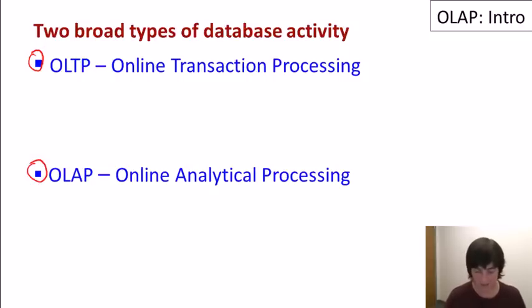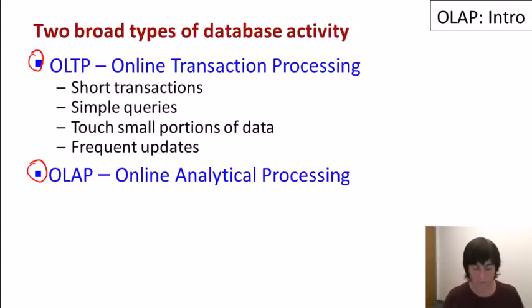Online Transaction Processing is typically characterized by short transactions, both queries and updates. Things like updating an account balance in a bank database, or logging a page view in a web application. Queries in OLTP databases are generally fairly simple. Find an account balance or find the GPA of a student. They typically touch small portions of the data. And updates in this environment can be frequent.